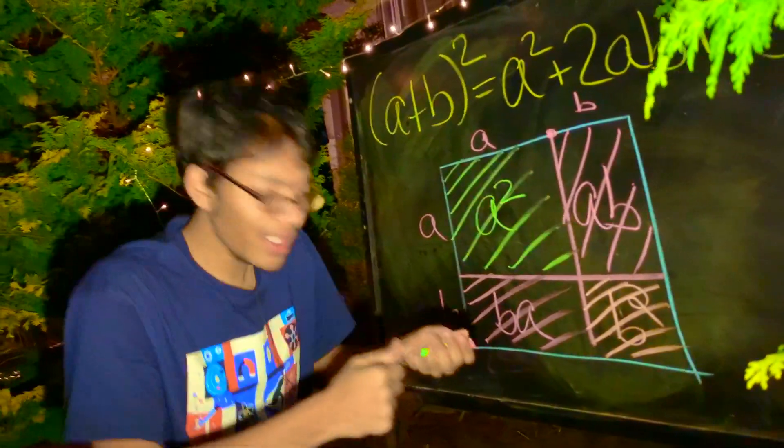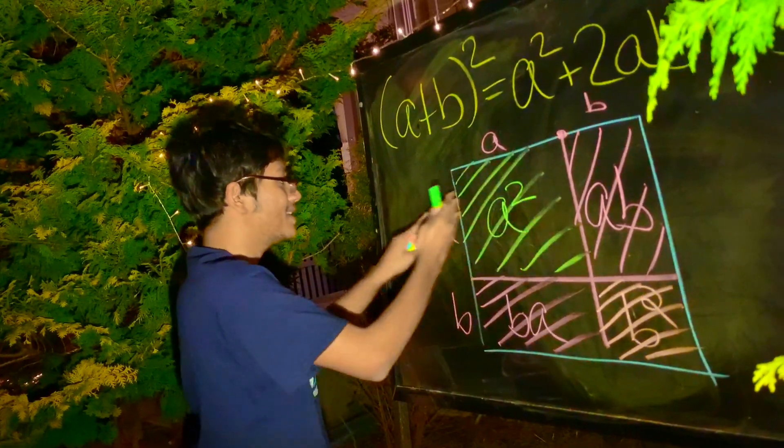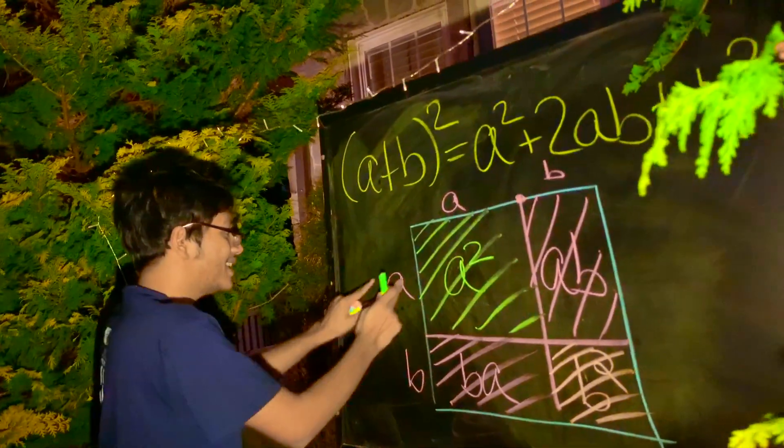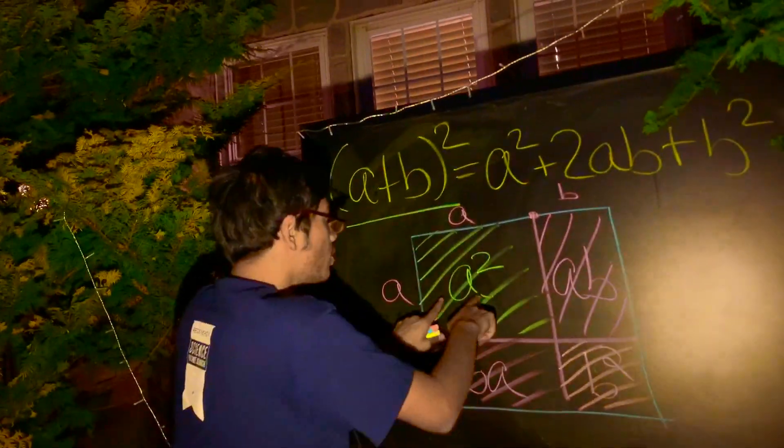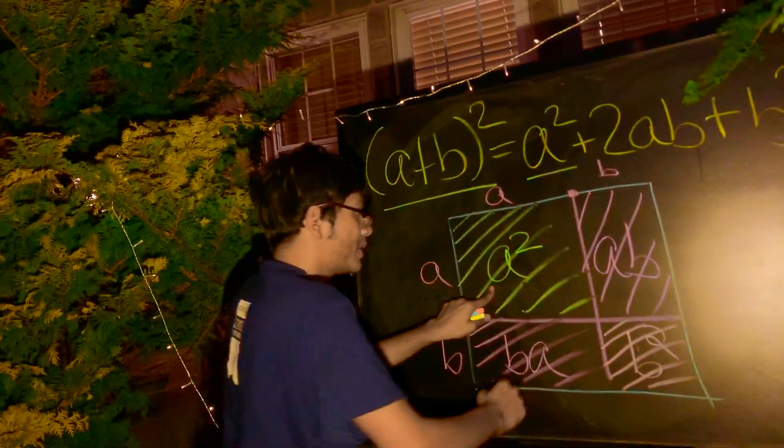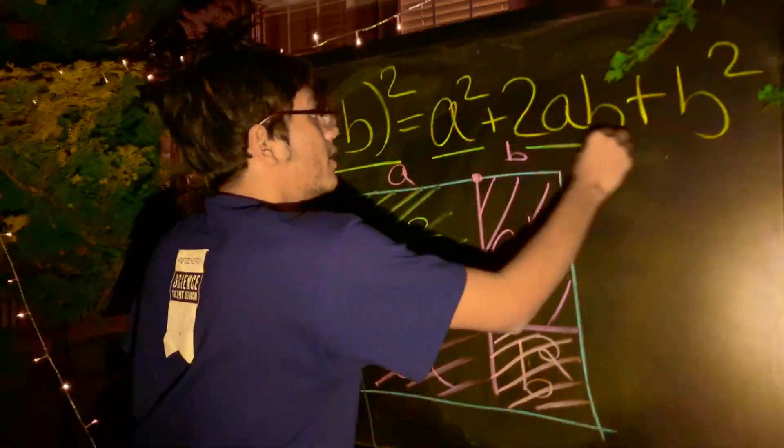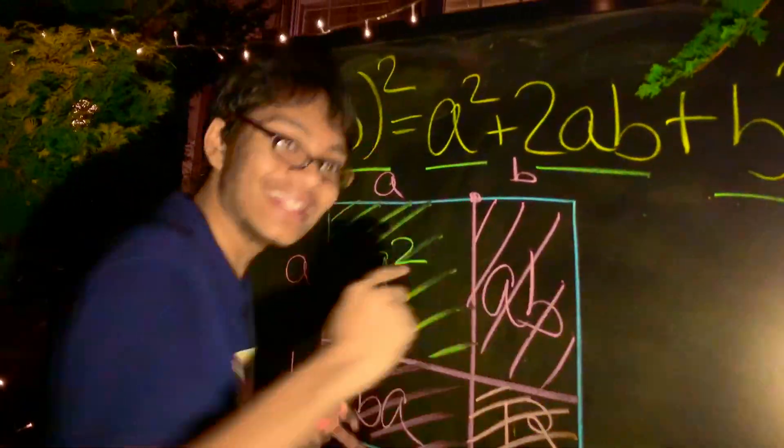What's the area of this square? Well, the area of this square, it's going to be the square of the side length. A plus B whole squared is equal to A squared plus 2AB plus B squared. And that, ladies and gentlemen, is how you prove the binomial formula for A plus B squared.